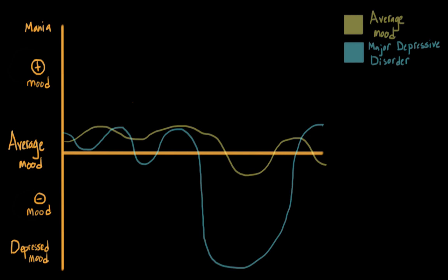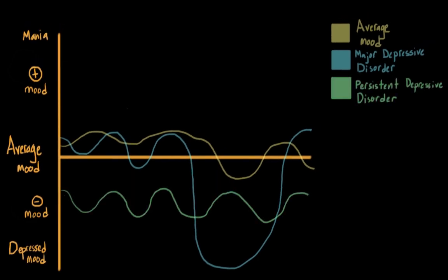We also have another disorder called persistent depressive disorder, or PDD. This is a chronic form of depression, and it used to be called dysthymia in earlier editions of the DSM. So instead of having their baseline here, someone with persistent depressive disorder might have their baseline a lot lower down, and all of their moods will happen within this depressive space.